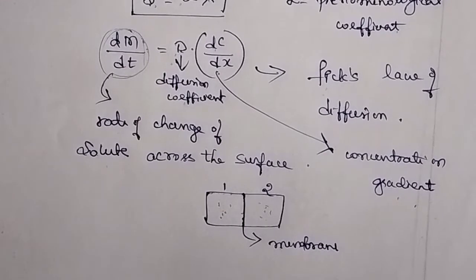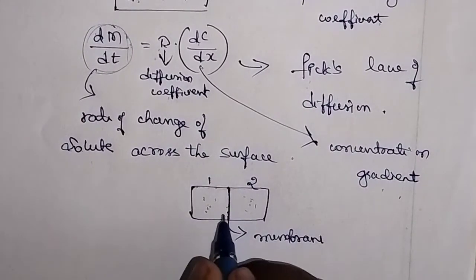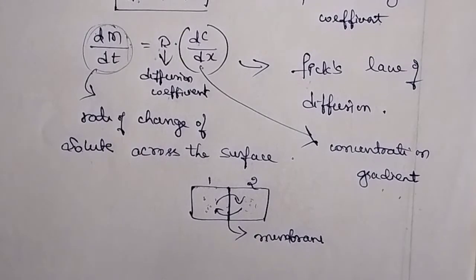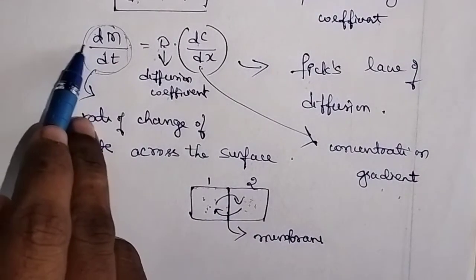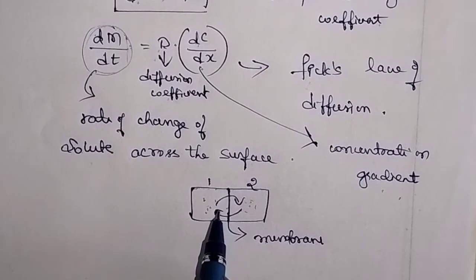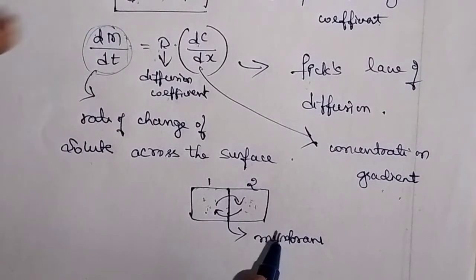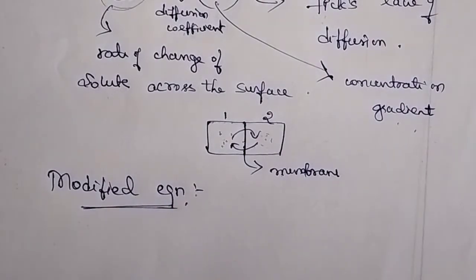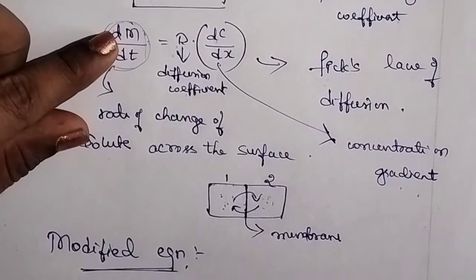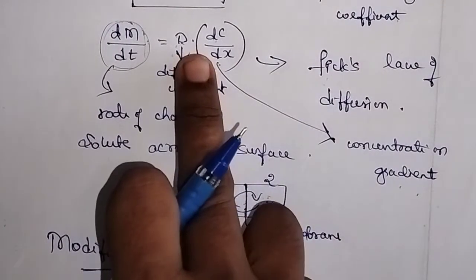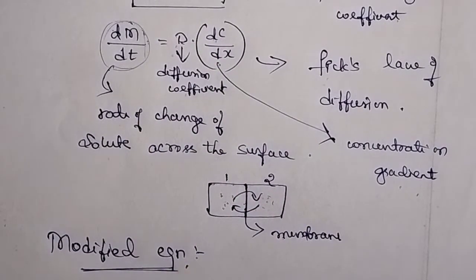Now, we know this membrane allows solute to transfer in both directions. However, this single expression is not sufficient — it cannot explain both processes happening simultaneously. So we need to modify this particular expression. We will write a modified equation to account for both processes.